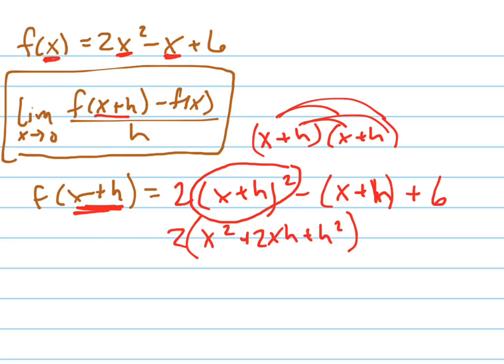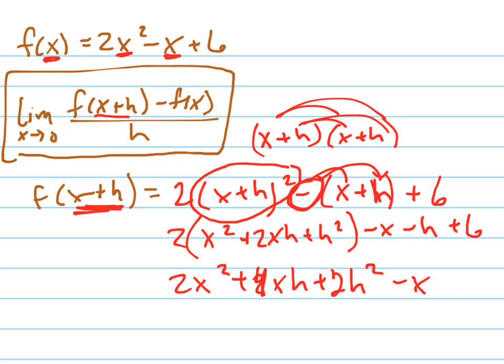I'm going to get x squared plus 2xh plus h squared. And there's a 2 in front of that. And also people make the mistake of forgetting to distribute that negative into both of these here. So that's minus x and minus h, and then I have the plus 6. Now let's distribute the 2 in. 2x squared plus 4xh plus 2h squared minus x minus h plus 6. Now let's add like terms.